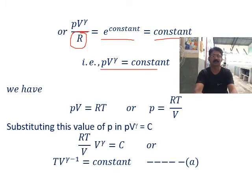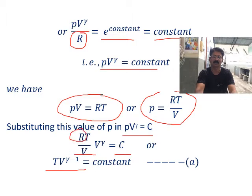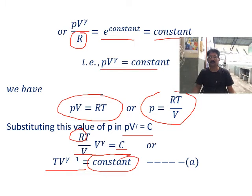Also, from PV equals RT, we have P equals RT by V. Substituting this in PV to the power gamma equals constant: RT by V times V to the power gamma equals constant. Since V to the power gamma divided by V to the power one gives V to the power gamma minus one, we get T times V to the power gamma minus one equals constant for an adiabatic process. Please remember this expression for the coming slides.